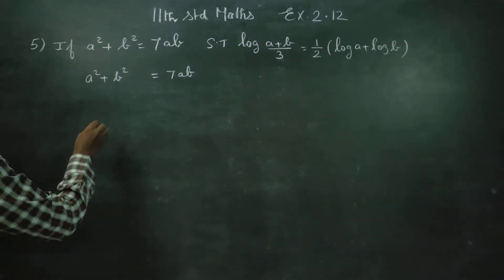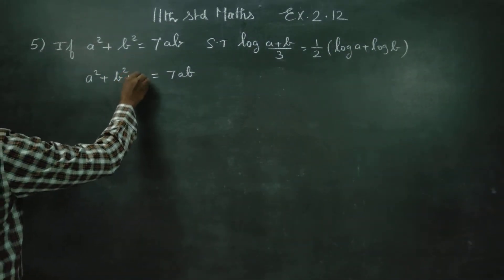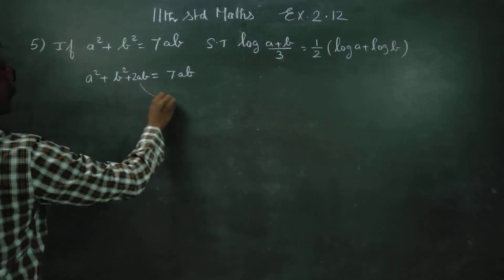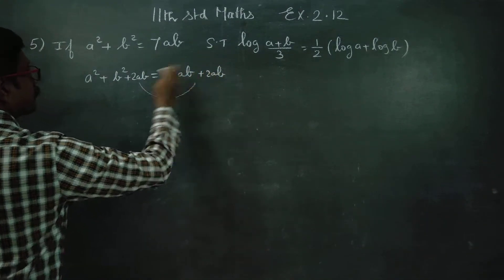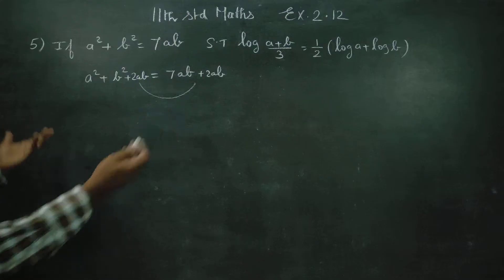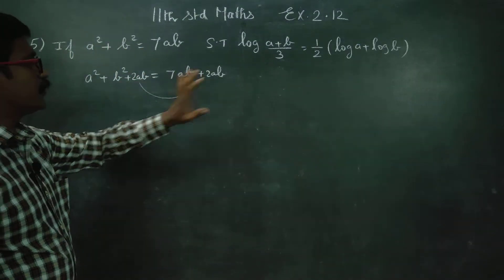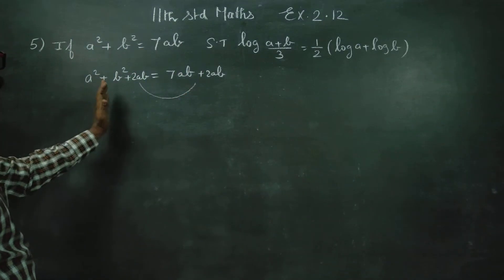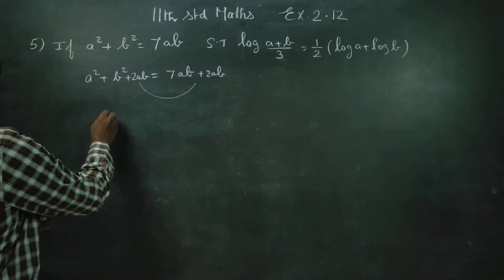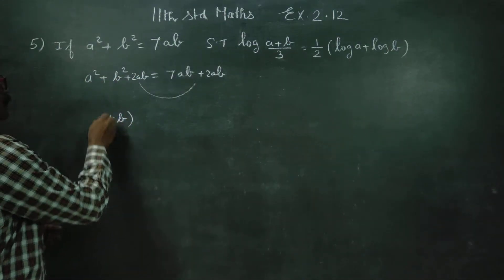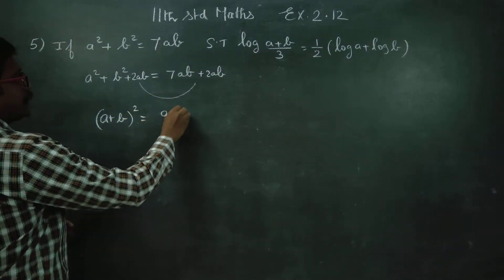I'm going to add 2ab on both sides. Adding 2ab to both sides gives a squared plus b squared plus 2ab. This is the (a plus b) whole square formula. So (a plus b) whole square equals 9ab.